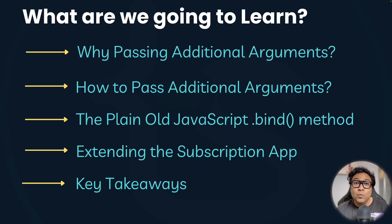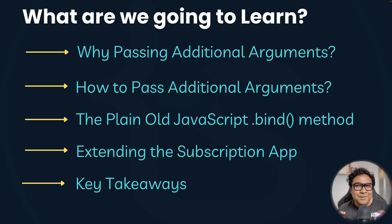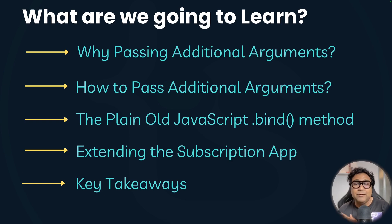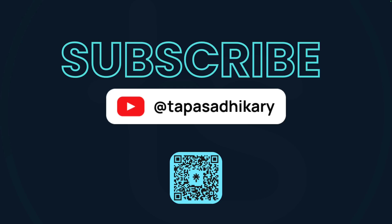In this video we are going to learn: why passing additional arguments is really required, why this use case is important, and how to pass these additional arguments. We'll use the plain old JavaScript bind method — people who have used and understood this keyword will relate to it, but I will explain it either way. We will also extend the subscription app from the previous server action crash course video, implement what we discuss in theory, and have a few key takeaways at the end.